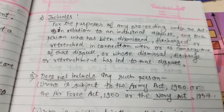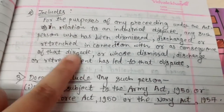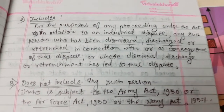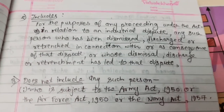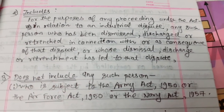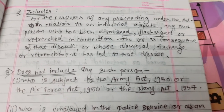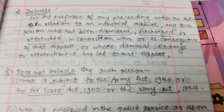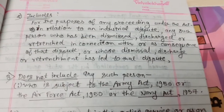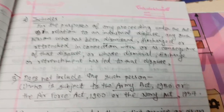The question can be asked: what does 'workman' include? For the purpose of any proceeding under the act in relation to an individual dispute, it includes any person who has been dismissed, discharged, or retrenched in connection with or as a consequence of the dispute, or whose dismissal, discharge, or retrenchment has led to that dispute. That person is known as a workman.